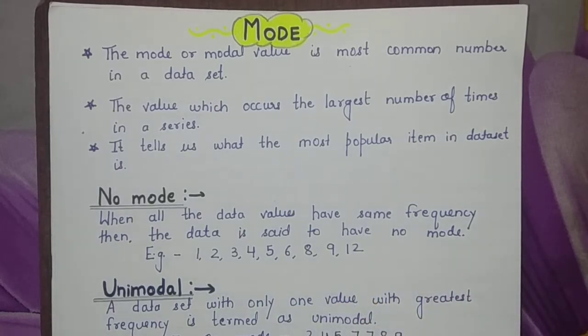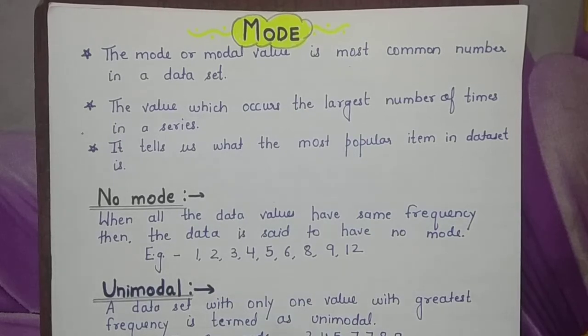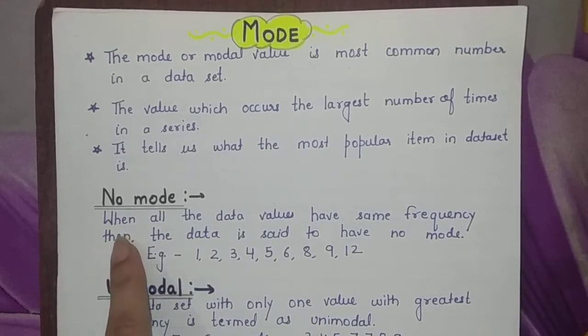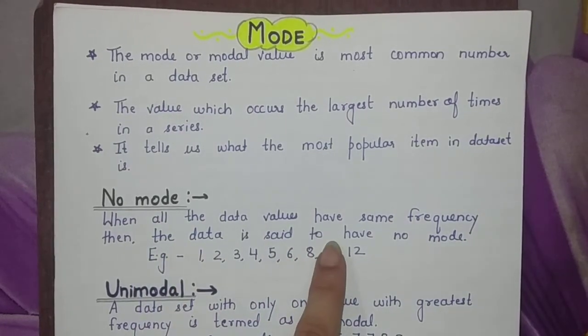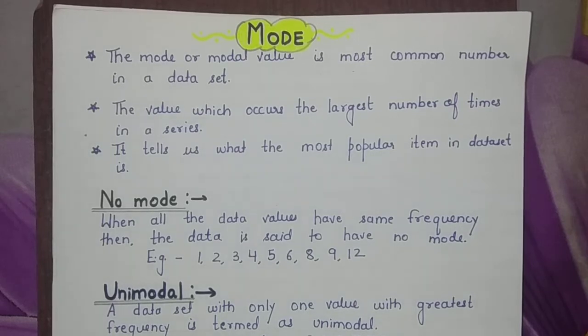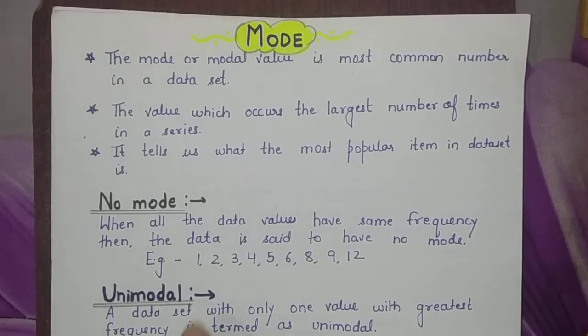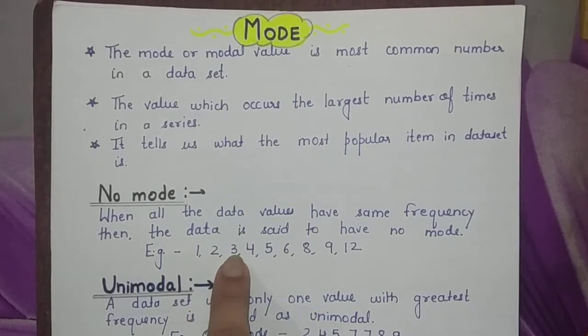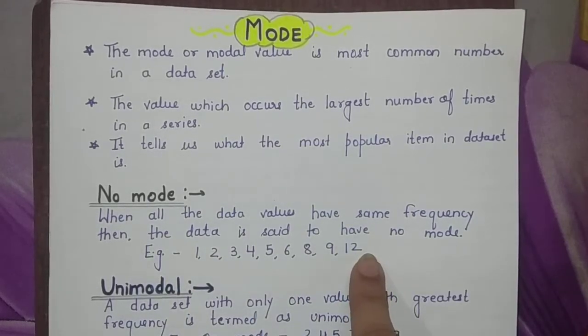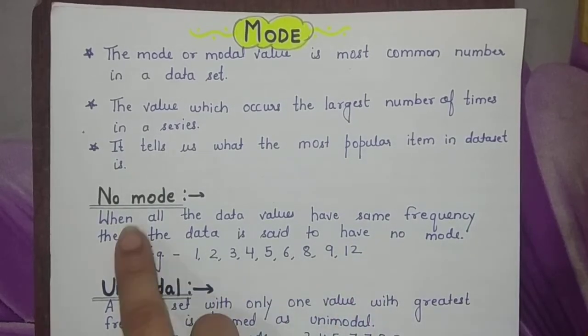If we talk about mode, there are four situations that can occur in a data set. The first situation is no mode. When all the data values have same frequency, then the data is said to have no mode. For example, 1, 2, 3, 4, 5, 6, 8, 9, 12 - every number is occurring only once, so there is no mode.